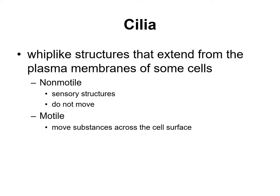Cilia (cilium being singular) are whip-like structures that extend from the plasma membranes of some cells. Cilia come in two forms: non-motile cilia, which don't move and serve as sensory structures detecting changes, and motile cilia, which do move and function to move substances across the cell surface.